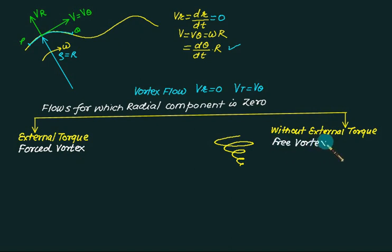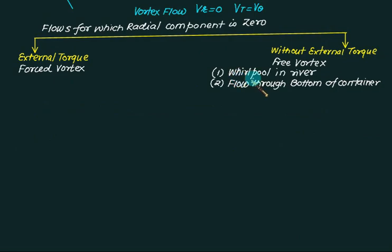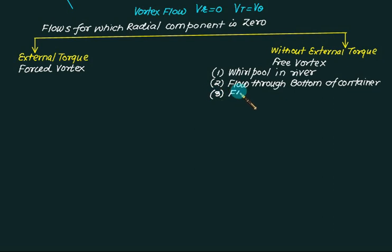Examples of free vortex include: a whirlpool in a river, flow in a sink, and flow around bends. An example of forced vortex is a washing machine, where external torque drives the rotation.